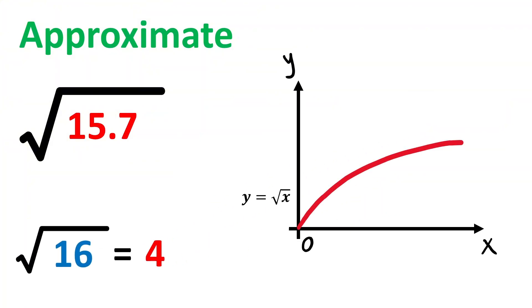Now, consider this graph of y equals the square root of x. Suppose this is the point (16, 4), and this is the point where the x value is 15.7.